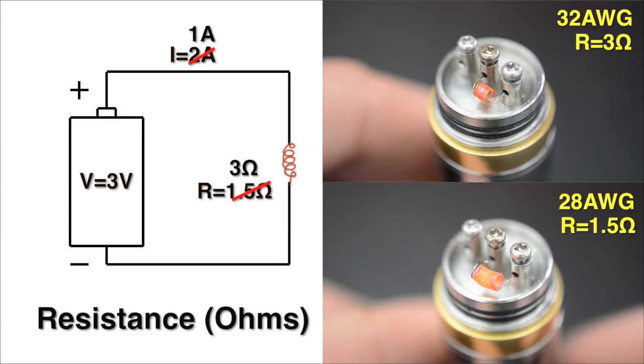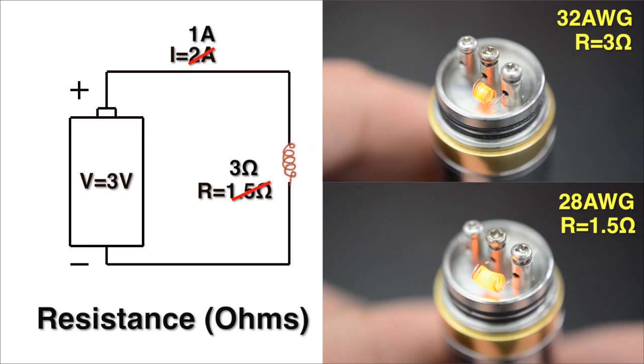Basically, if you have a 28 gauge and a 32 gauge wire with the same length, the thinner 32 gauge wire will have the higher resistance. Higher resistance translates to less current flow and less power.